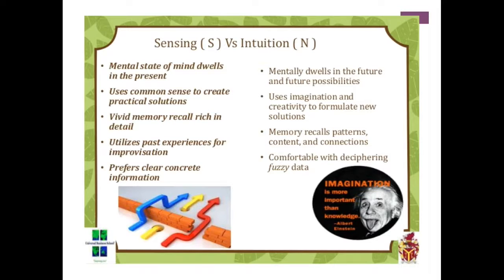An N, on the other hand, prefers to dwell in the future and future possibilities. They use imagination and creativity to formulate new solutions, recall memory through patterns and connections, and live for how everything is interrelated. They are comfortable with deciphering things from fuzzy data. This is how it helps me as a teacher to know how many N's and how many S's there are — whether someone can make connections from broad statements, or whether they need X equals 1, X equals 2, X equals 3 to step forward to X equals N. Just very abstract.